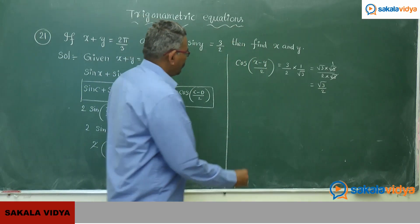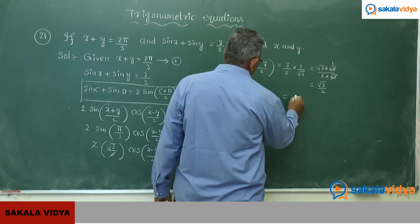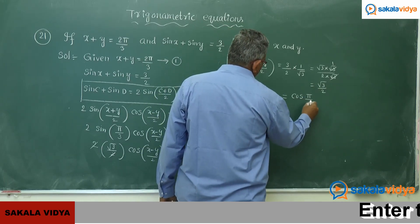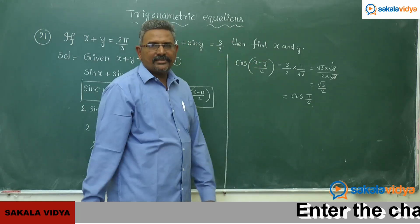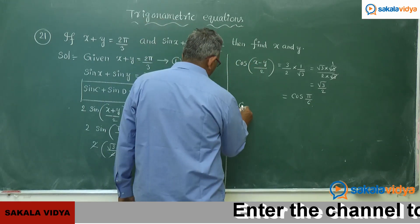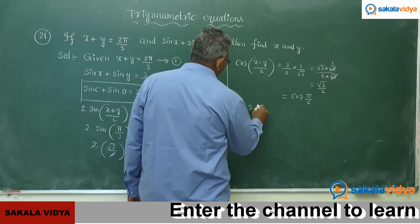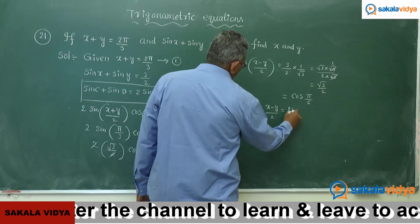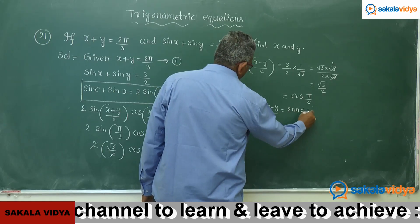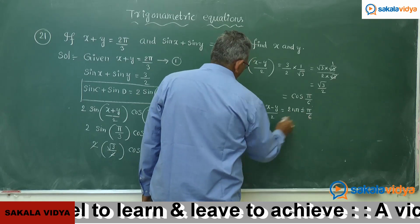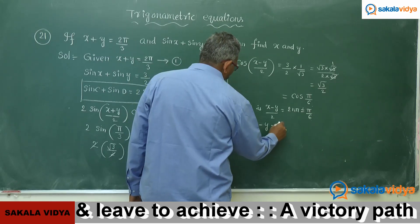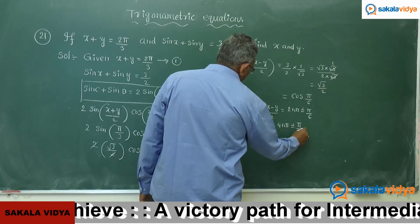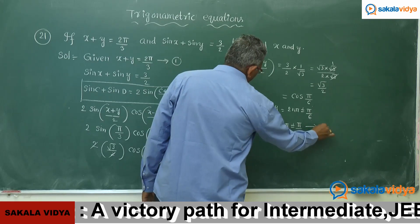Finding the principal value: cos((x−y)/2) equals cos(π/6), so the principal value is π/6. The general solution is: x minus y by 2 equals 2nπ ± π/6, which gives x minus y equals 4nπ ± π/3. This is equation 2.